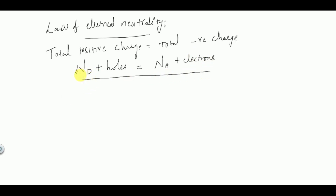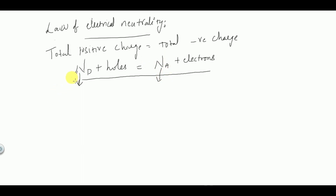ND represents the donor impurity atoms — the total number of impurity atoms in the case of N-type semiconductor. NA represents the acceptor impurity atoms — the total number of impurity atoms in the case of P-type semiconductor. This is the law of electrical neutrality.